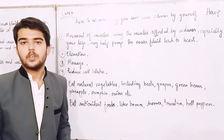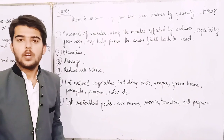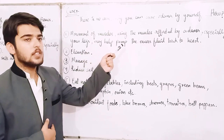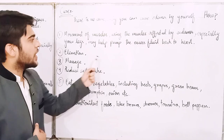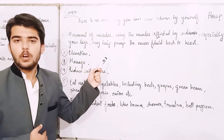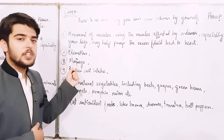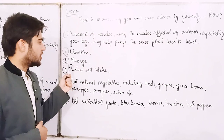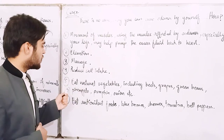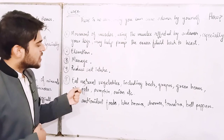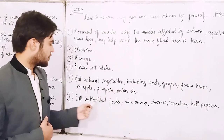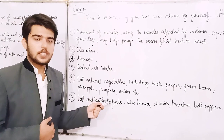How can you manage oedema? The first step is movement of muscles — use the muscles affected by oedema, especially your legs, as this may help pump the excess fluid back to the heart. Second, elevation. Third, massage. Fourth, reduce salt intake. Fifth, eat natural vegetables including beets, grapes, green beans, pineapple, pumpkin, onion, etc.